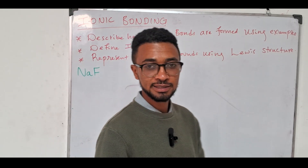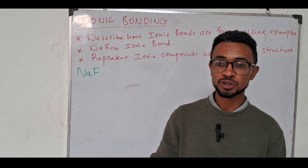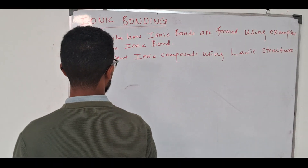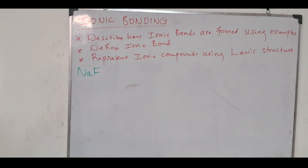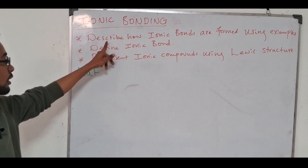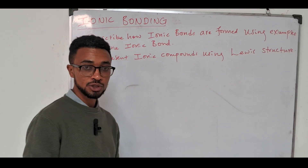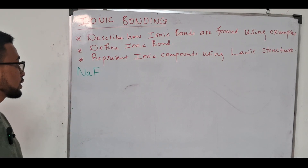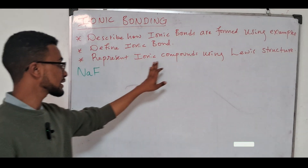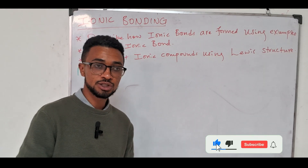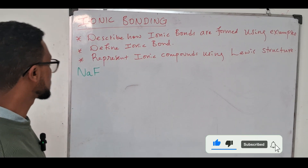Hello everyone, welcome back. This is part two of the chemical bonding series. In this video we'll focus on ionic bonding. By the end of this discussion you should be able to describe how ionic bonds are formed using examples, define ionic bonds, and represent compounds using the Lewis dot structure.